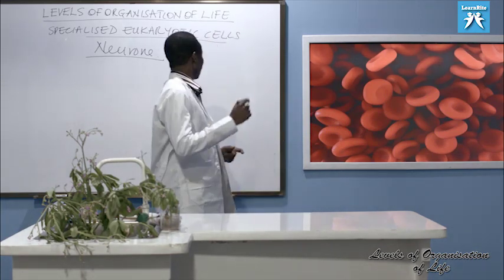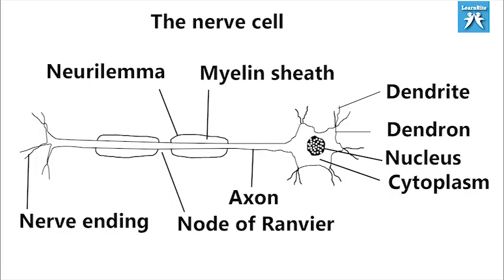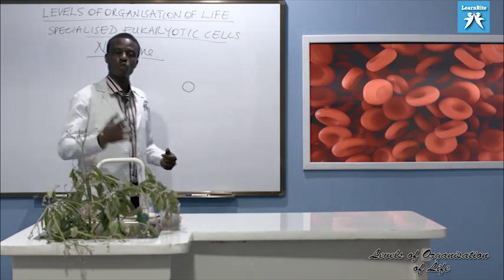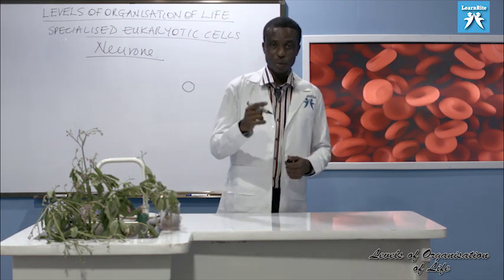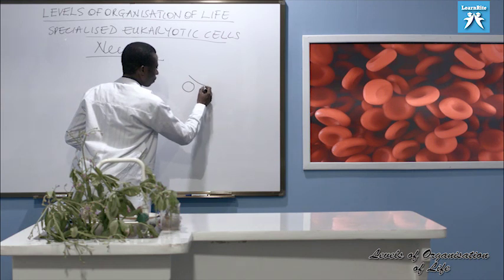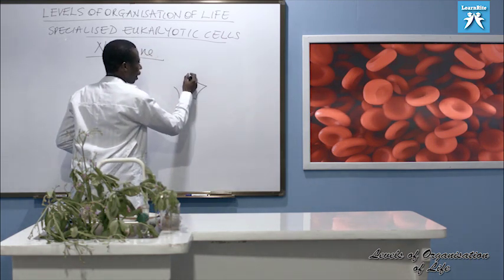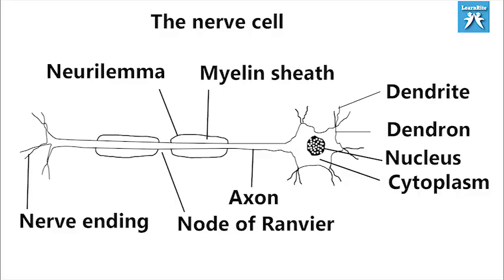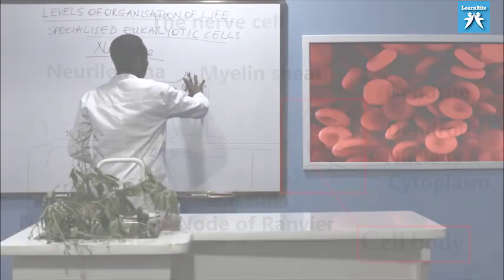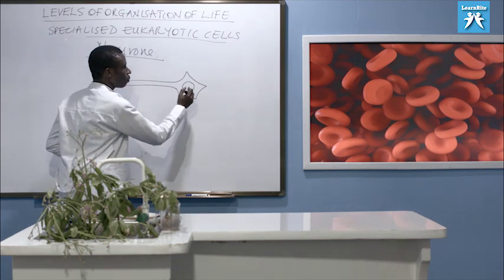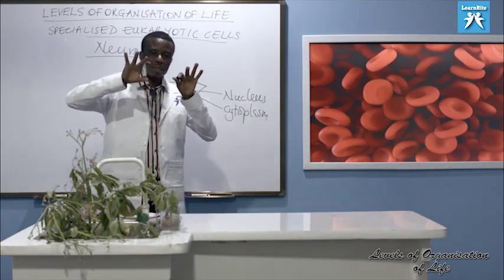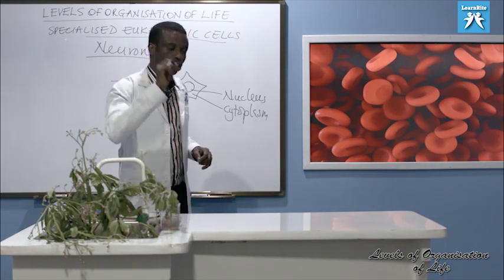So you want to look at the nerve cell — let's draw it nicely. There are different types of nerve cells, but the one that we'll be drawing is a motor neuron. The nerve cell is made up of the cell body, and the cell body is made up of the nucleus, cytoplasm, and then we have cytoplasmic extensions of the cell body.